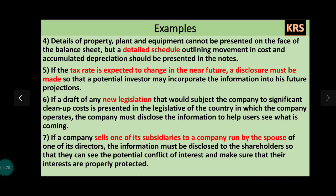Fourth point: details of property, plant and equipment cannot be presented on the face of the balance sheet. In audited company accounting reports, a schedule is given for each asset because full detailed information cannot be provided in the balance sheet itself — otherwise it would become very large. So the details of property, plant and equipment should be given in schedules below the balance sheet, showing cost of the asset, accumulated depreciation for the full year, sales, and reserves.